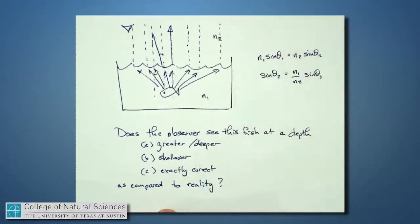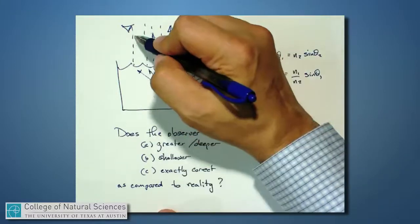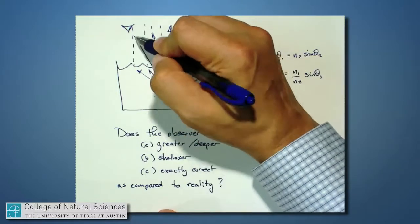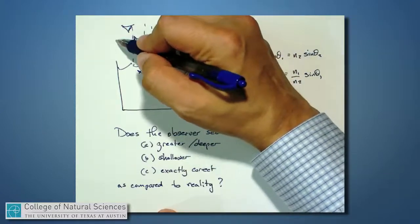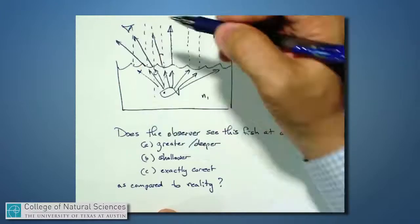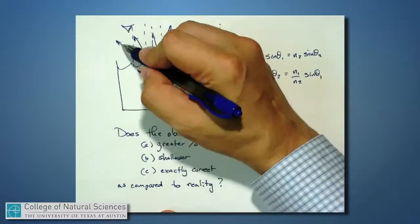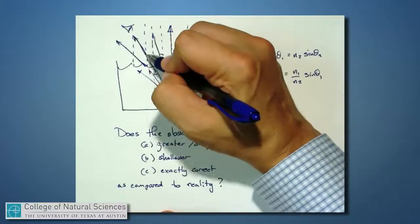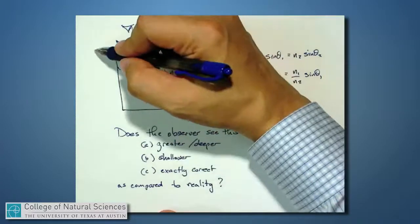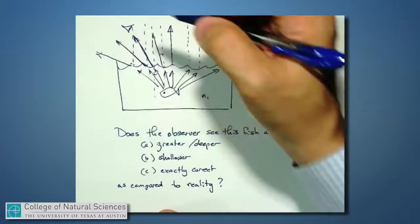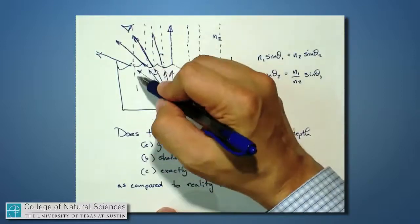This light right here is traveling in at a relatively big angle, and now it needs to leave at an even bigger angle. That light is traveling in at an even bigger angle still, and it needs to travel away from the surface at an even bigger angle. Same here—this light needs to be bent very far from the perpendicular because it's coming in pretty far from the perpendicular and it has to be bent away even more.